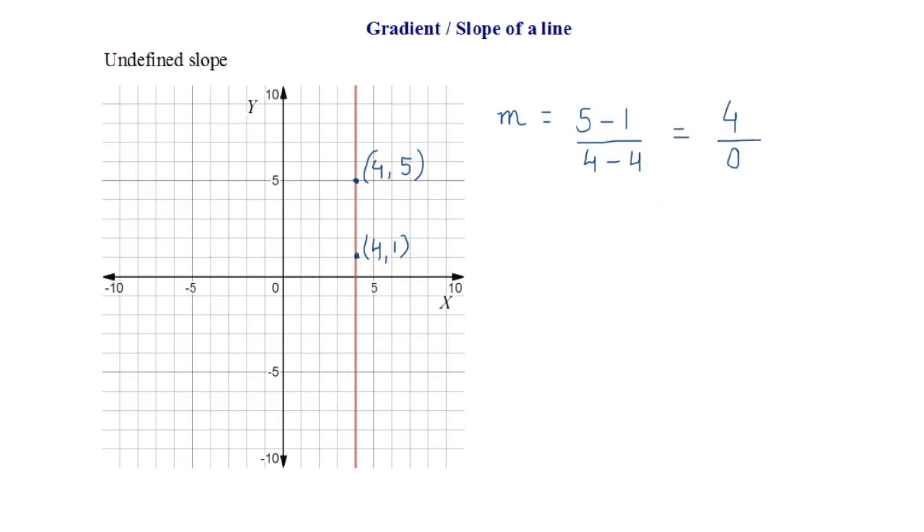Now when the denominator of a fraction is 0, is that fraction defined? No, mathematically it doesn't exist. And hence we say that the slope of any vertical line is not defined or undefined.